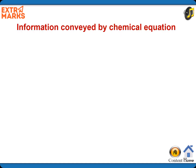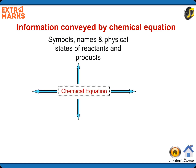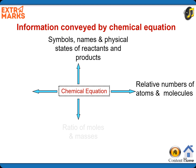Information conveyed by a chemical equation: it tells us about symbols, names, and physical states of reactants and products; it gives information about relative numbers of atoms and molecules; it gives the ratio of moles, masses, and volumes.